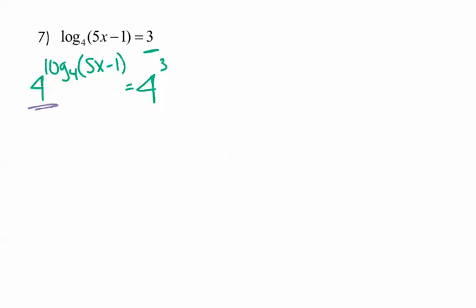So remember, we've got to do the same thing on each side. So now we're doing that exponent base 4 because log base 4 is the same. And those will cancel out. So now we're going to be left with 5x minus 1. And this right here, that's a number. In fact, that's 64.